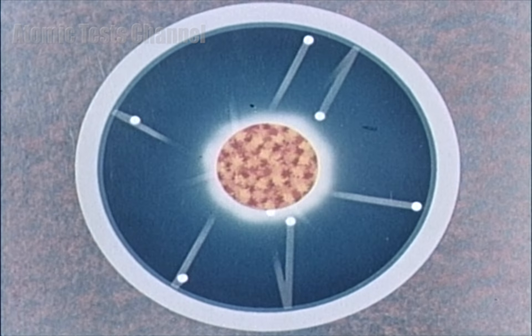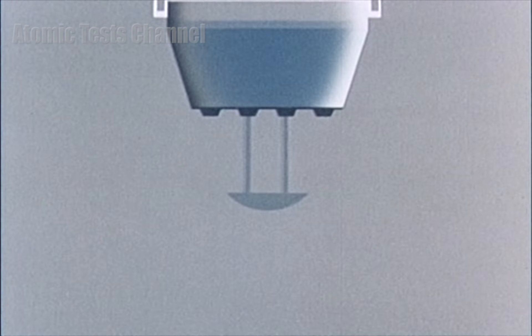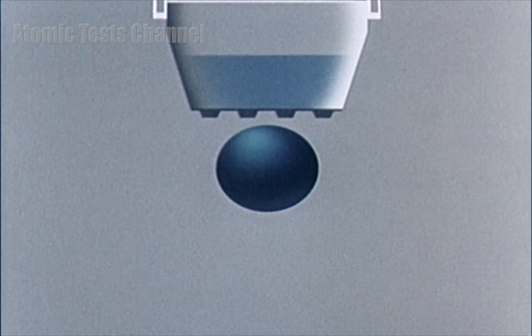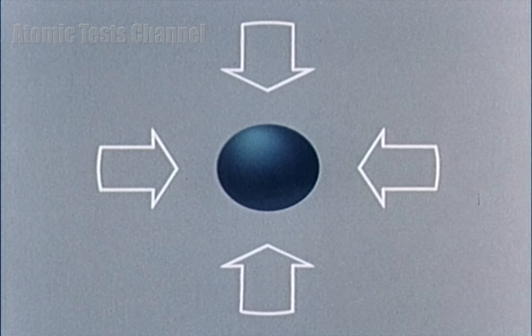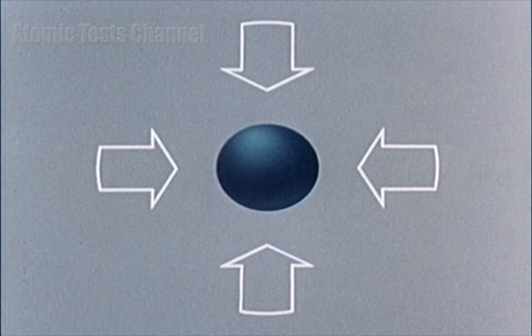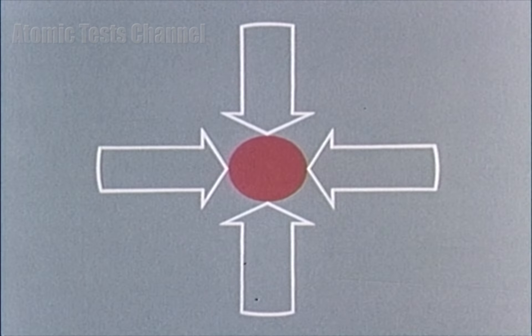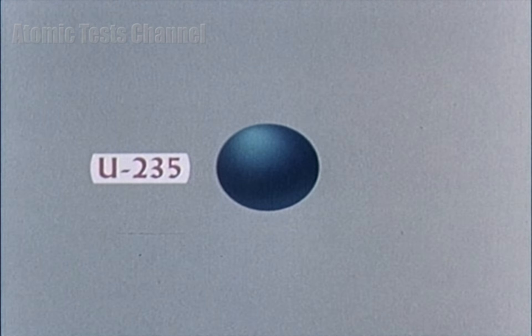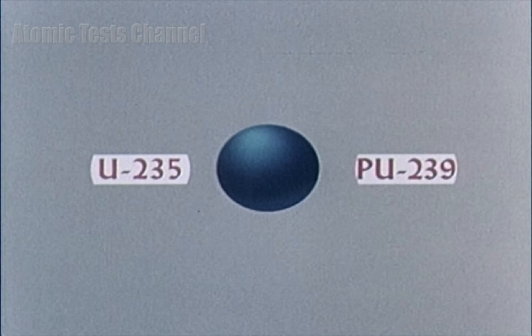Thus, under proper conditions, the result is a nuclear explosion. A more economical use of nuclear material is achieved with the implosion system of detonation. It is based on the principle of increasing the criticality of the active material by increasing its density. The implosion system can utilize either uranium-235 or plutonium-239 or a combination of both.